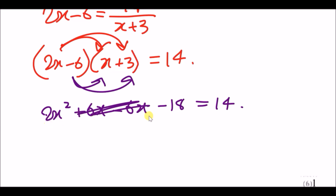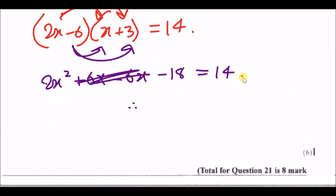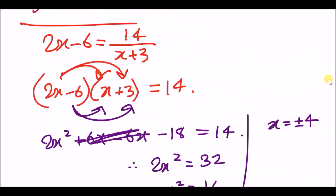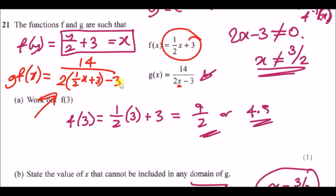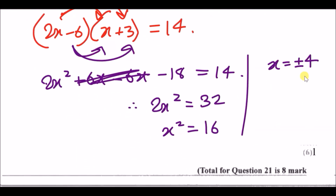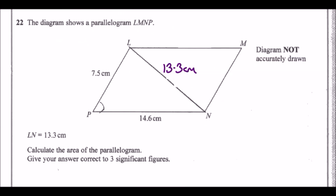Now rearrange: add 18 across to get 2x² = 32, then divide by 2 to get x² = 16, and finally square root to get x = ±4. If no restriction is stated on x, the answer is ±4. If told x is negative, use −4; if positive, use +4.